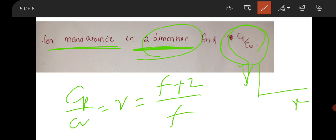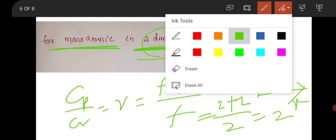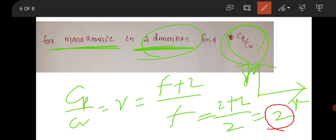Two dimensions was mentioned. For monoatomic in two dimensions (x and y plane), it will have two possibilities for motion—it can move in x direction or y direction. So degree of freedom will be 2. It will be (2+2)/2, which is 4/2, that is 2. The answer will be 2.